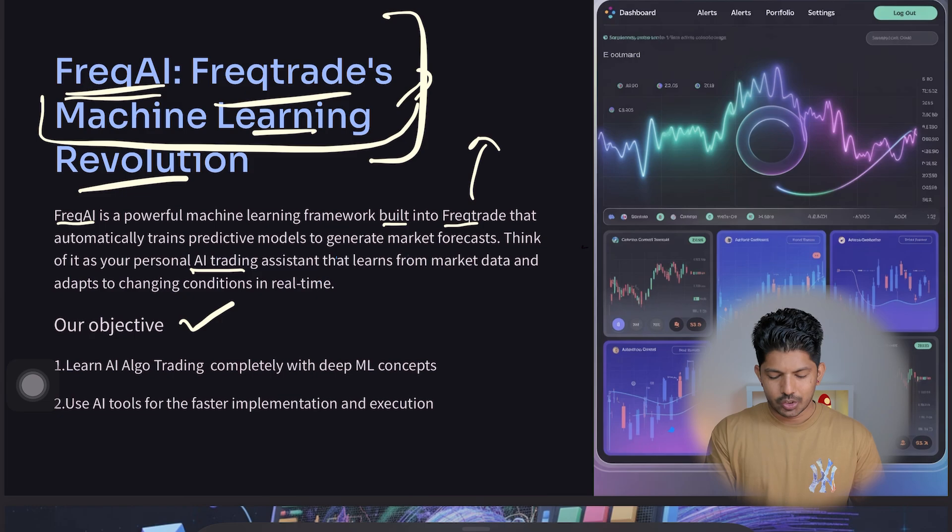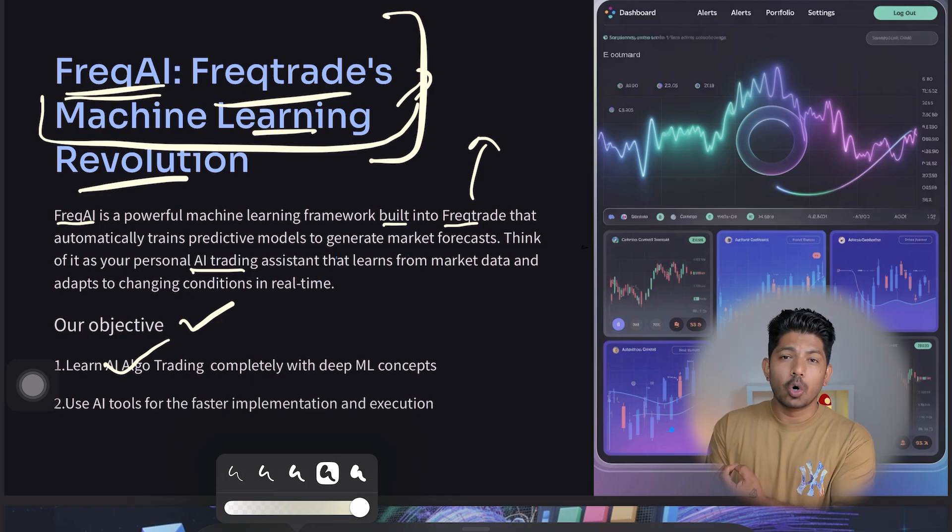What will be our objective in this series? First, we'll be learning about AI algo trading completely with deep ML concepts—the machine learning concepts. Then we'll be using AI tools to automate this whole trading infrastructure. We have to use all those tools to make our trading more efficient, faster, and more error-free because when humans do the work, they always make mistakes. We'll try to use automation tools like N8N, new-gen databases like Airtable, Make.com, and all those other tools to make our complete workflow completely automated and faster.